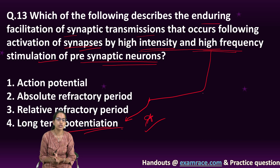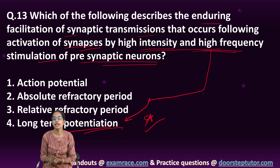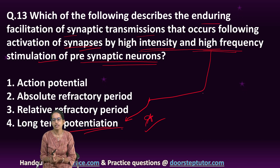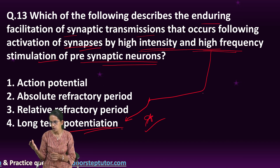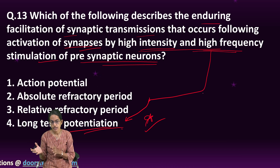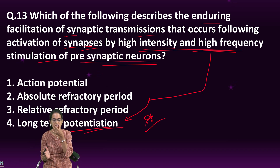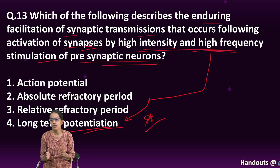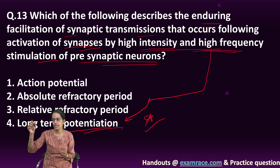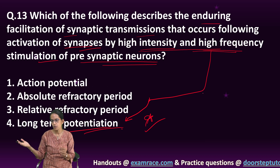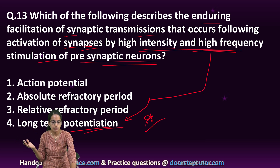Relative and absolute refractory periods are again important. The relative refractory period is more intense and involves the neuron moving into a relative refractory state. In an absolute refractory period, the action potential reaches its peak and then the cell cannot fire anymore — that is what is known as the absolute refractory period.